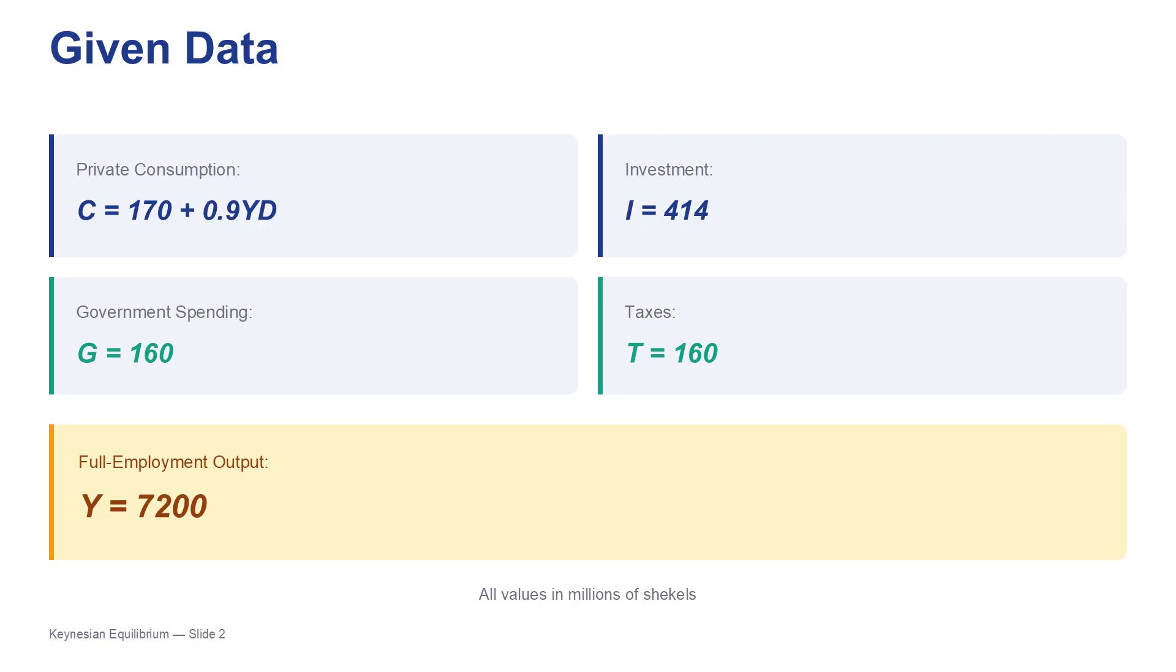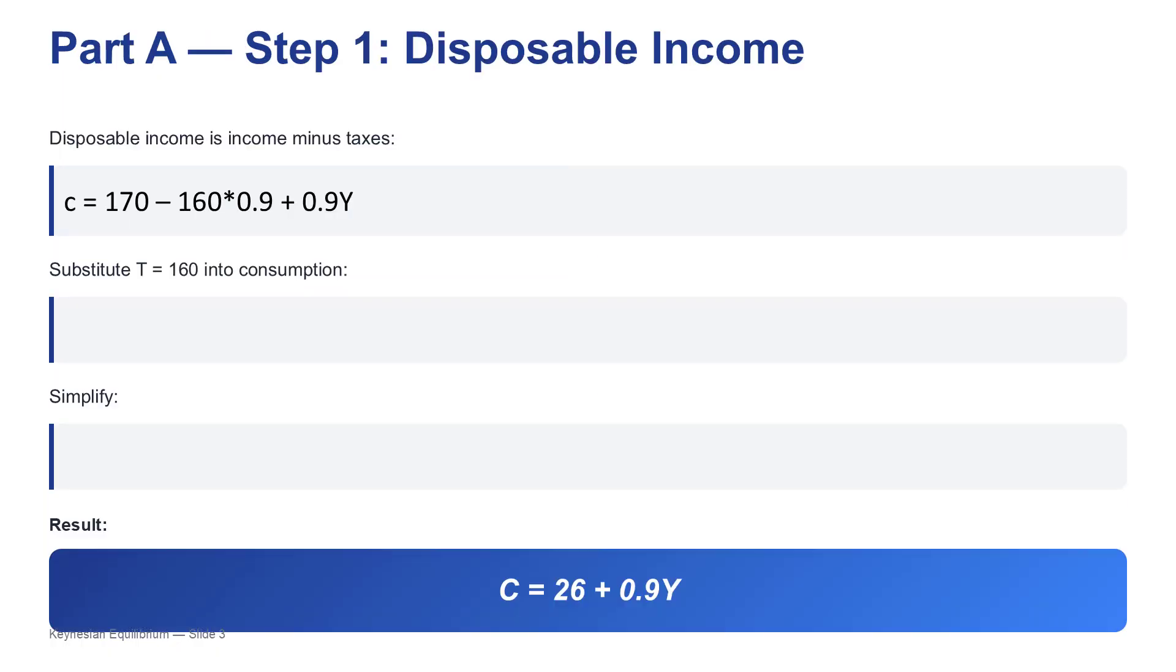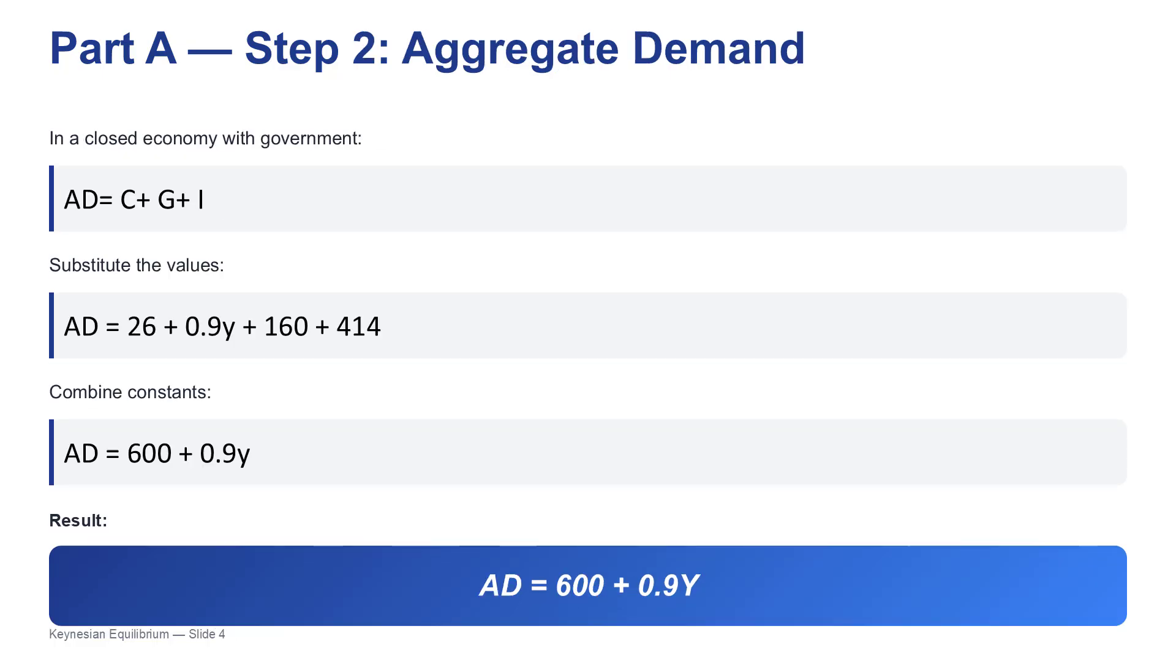Let's get into the calculation. First step: Simplifying that consumption function. It currently depends on disposable income, YD, but we need it to depend only on total output, Y. And we know disposable income is just income minus taxes, Y minus T. Since taxes are a fixed 160, we can just plug that number in. So the equation becomes C equals 170 plus 0.9 times the quantity, Y minus 160. And if you distribute that 0.9, you get 0.9Y minus 144. Then you combine that with the 170, which gives us a much cleaner consumption function, C equals 26 plus 0.9Y.